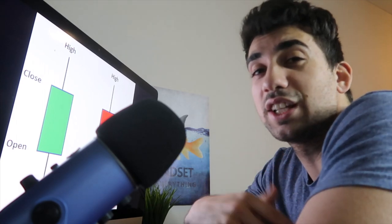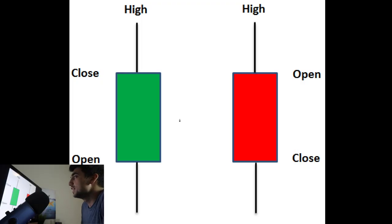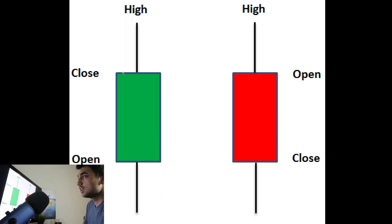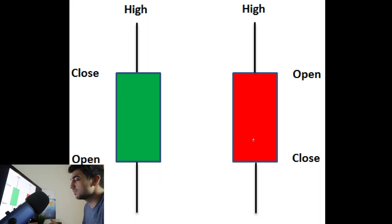When talking about candlesticks, this is one of the most basic things you can cover, and it's really good for new traders or even veteran traders to go over this topic because candlesticks are a little more complex and they're pretty much the core of what you want to do as a trader. Candlesticks represent the price action. We usually see two types: the green one and the red one — you can change the colors to whatever you like, but green means bullish, prices went up, and red means bearish, prices went down.